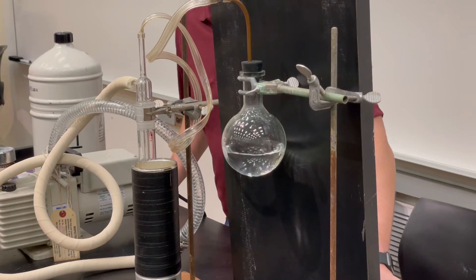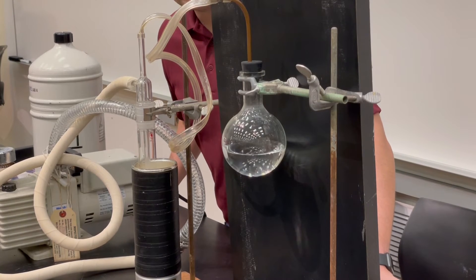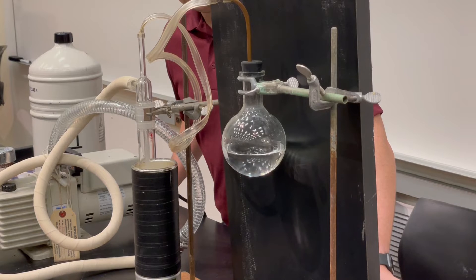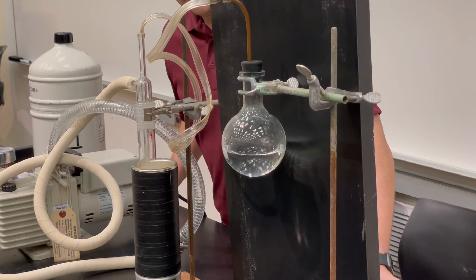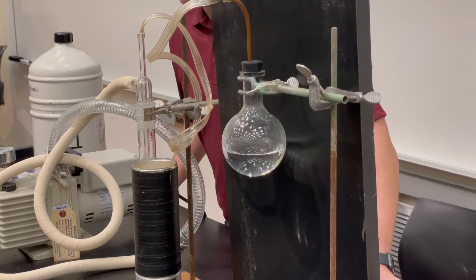And by turning the vacuum pump off, we should see the boiling slow down and then stop altogether in about a second or two. So there you have it, boiling water at room temperature.